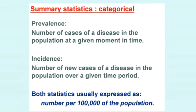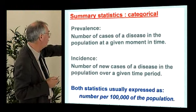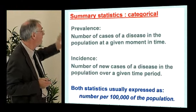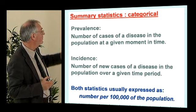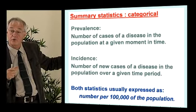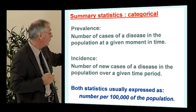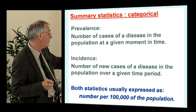There are two particular types of probability that come up in MCQ questions: prevalence and incidence. Prevalence is the number of people with a disease in the population at a given moment in time — for example, how many people currently in Malawi are drug resistant to TB therapy. Incidence is the number of new cases which appear in a given period of time — for example, the number of new people who become drug resistant in a one-year period. Both are usually expressed as the number per 100,000 of the population.